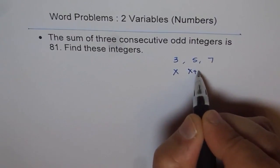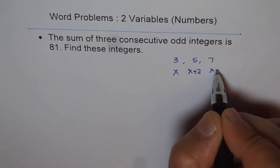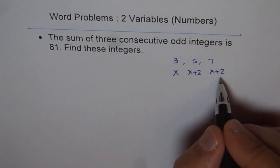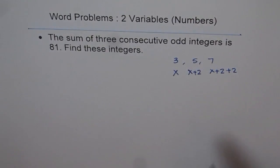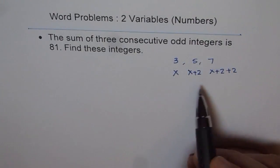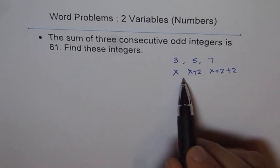Then the next term you can get by adding 2 each time. So if you add 2 each time, then I should write +2, add 2 more. So if you add 2 each time, you keep on getting odd integers in a sequence.